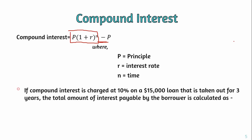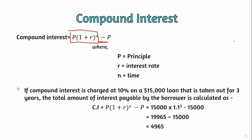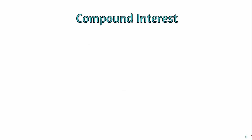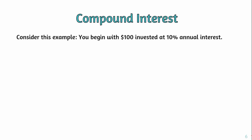For the same example — 10% on a $15,000 loan for three years — we calculated simple interest as $4,500. Now applying the compound interest formula to the same values gives a result of approximately $4,965. So compound interest is higher than simple interest for the same principal and rate.